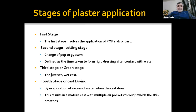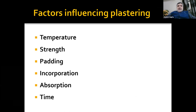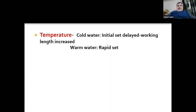There are factors which influence plastering. First is temperature. When we immerse our plaster bandage in cold water, the initial set is delayed and the working length is increased. This is indicated when we are manipulating fracture fragments for reduction — we can feel the fracture fragments within the cast and want to hold the reduction for a while, so we need a delayed set. If we immerse the plaster bandage in warm water, the reaction time is decreased and there will be rapid set.